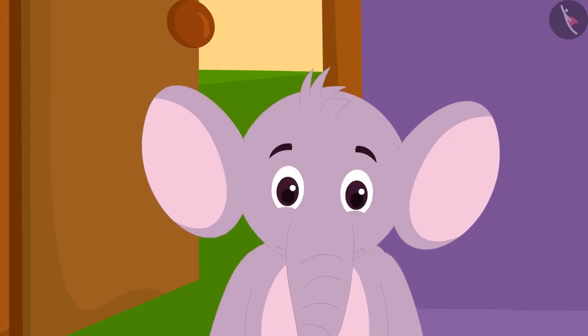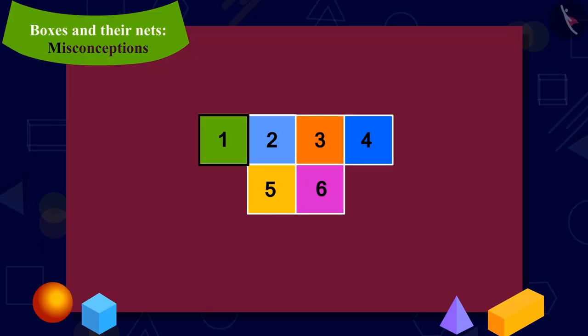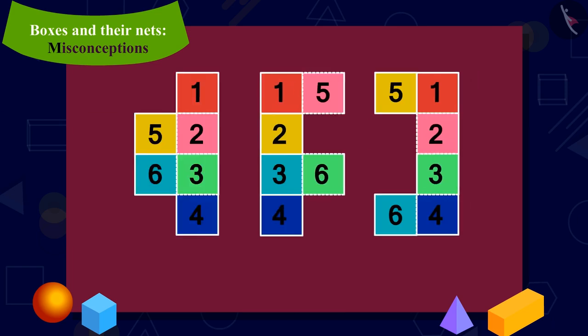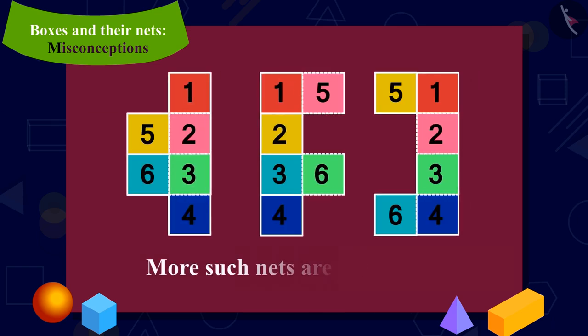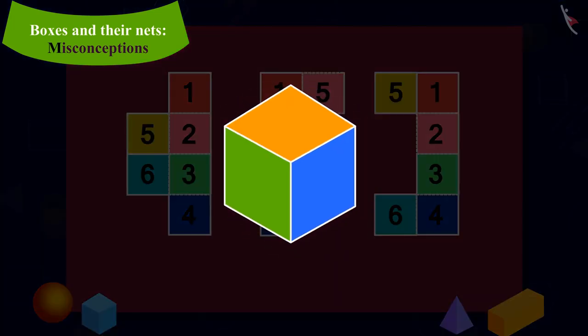Appu was once again shocked. Hey, this figure did have six surfaces and all the surfaces were square, yet I could not make a cube from it. Yes, kids, it is possible to have more such nets which have six square surfaces, but by folding them, we cannot make a cube.